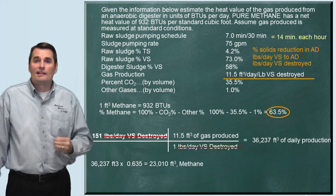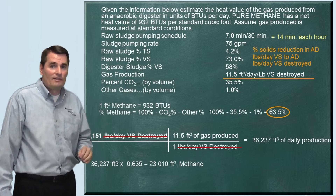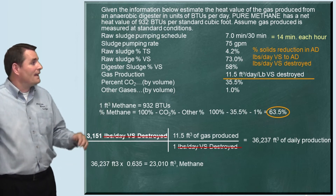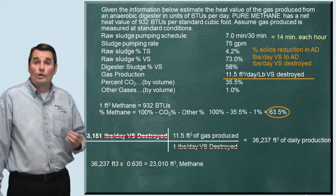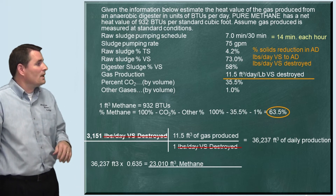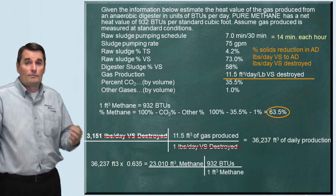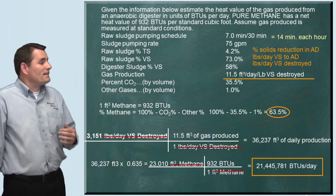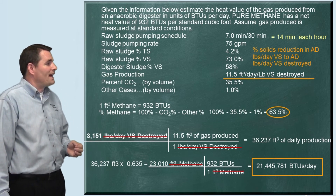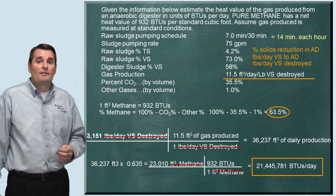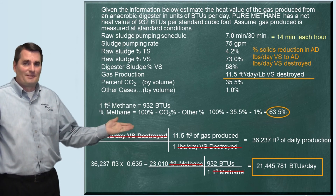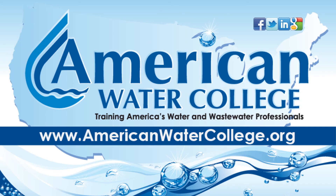Now we know how much methane is produced each day. We just need to convert this to a heat value. Since every cubic foot of methane has 932 BTU of heat value, we take 23,010 cubic feet of methane and multiply by 932 BTU per cubic foot. The result is 21,445,781 BTU per day — and that is how this problem is solved.